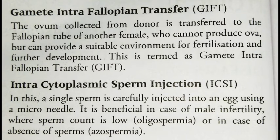The third technique is GIFT, or Gamete Intra-Fallopian Transfer. In this method, eggs are collected from a donor female and transferred into the fallopian tube of a second woman. After the transfer, fertilization and further processes are carried out naturally inside the body. This technique addresses natural disability in fertilization.